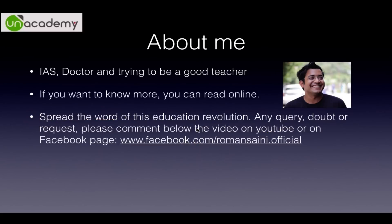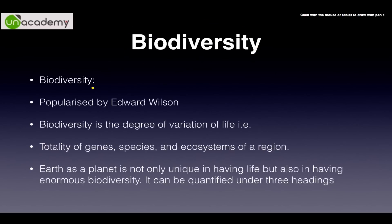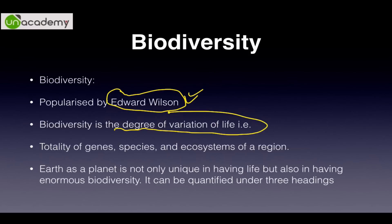We will be dealing with biodiversity. Bio means living, diverse means varied, so biodiversity literally means the diversity or degree of variation in life. This word was popularized by a guy called Edward Wilson — remember his name, it might come in prelims. It is the degree of variation of life, or it can also be said to be the totality of genes, species, and ecosystems of a region. It includes all levels of diversity: genetic, specific, and ecosystem diversity.